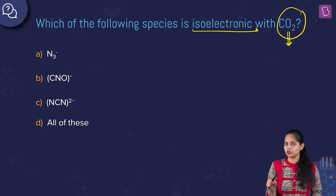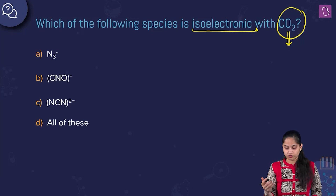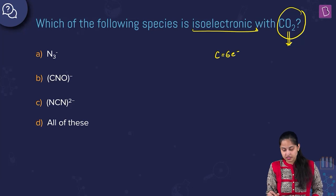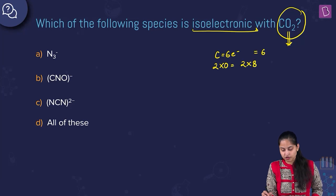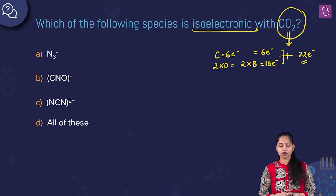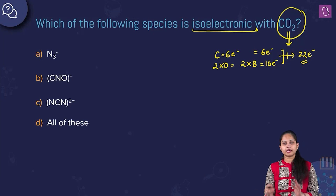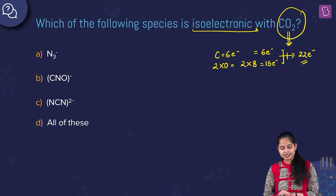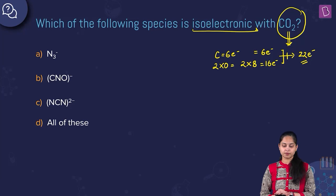In carbon dioxide, we have one carbon atom and two oxygen atoms. Carbon has 6 electrons, and two oxygens have 2×8 = 16 electrons. So in total, 22 electrons are present in carbon dioxide — 6 from carbon and 16 from the two oxygens.